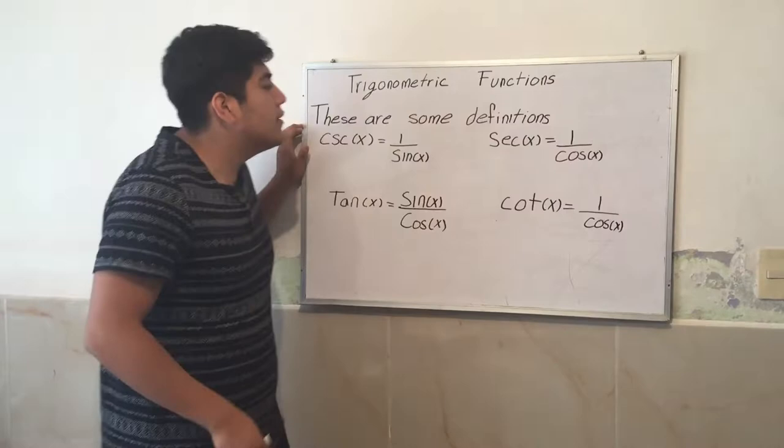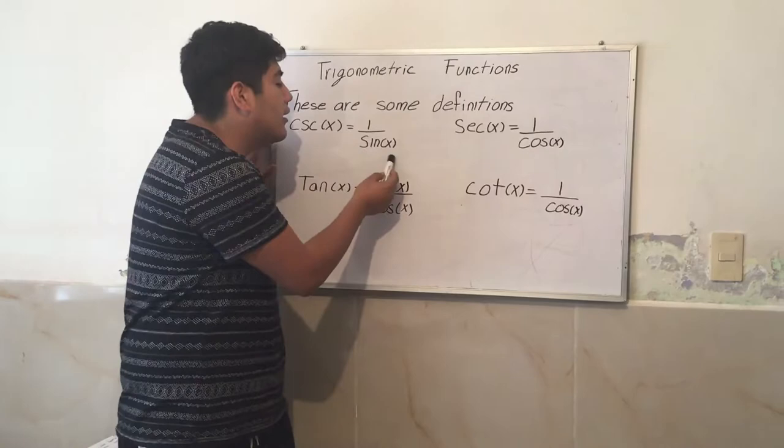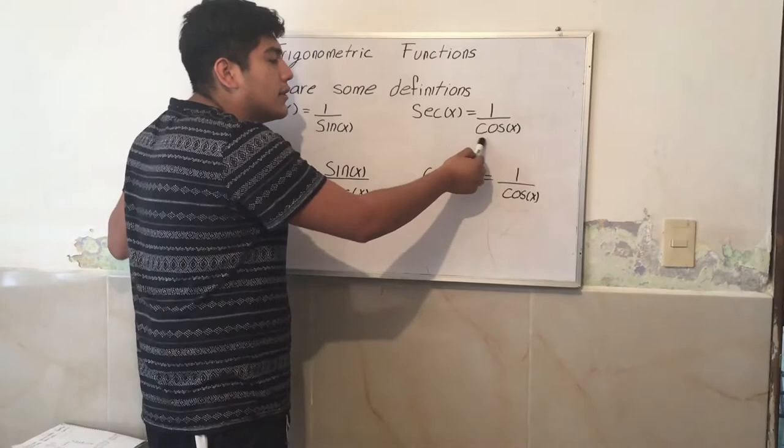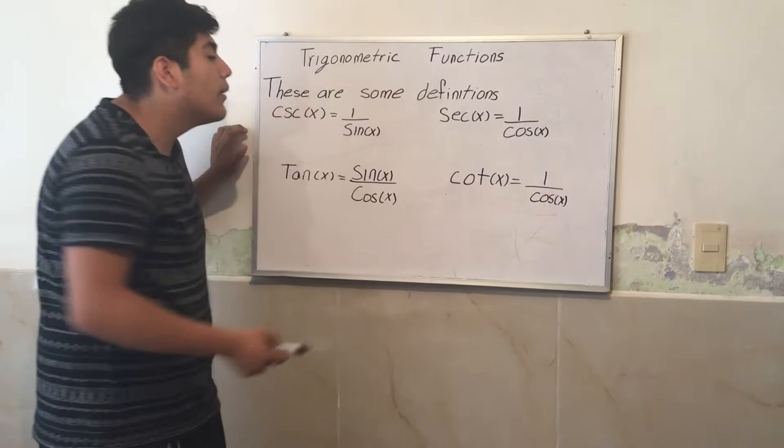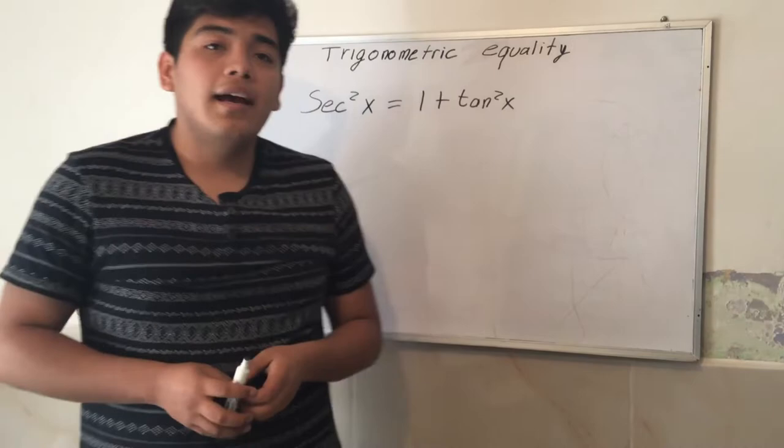These are some definitions. Cosecant of X equals 1 over sine of X. Secant of X equals 1 over cosine of X. Tangent of X equals sine over cosine. Cotangent of X equals 1 over cosine of X.